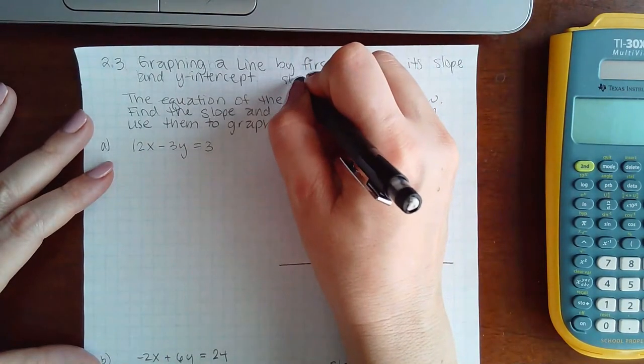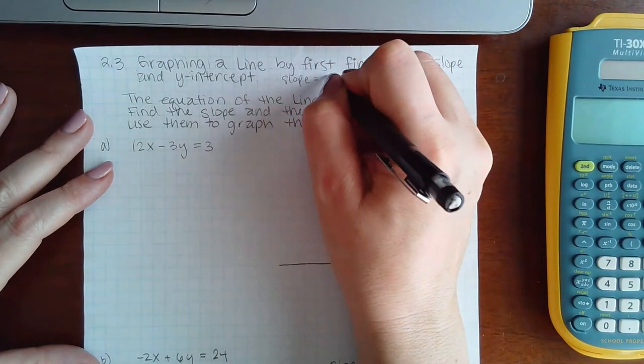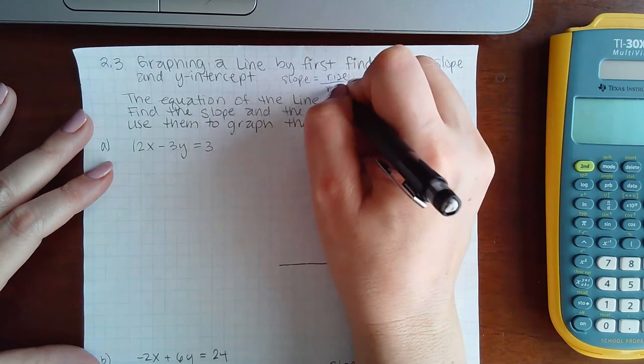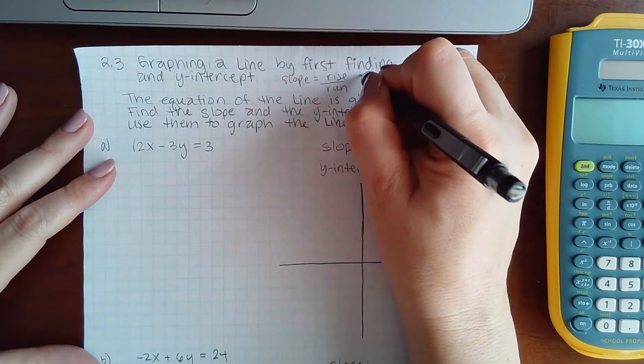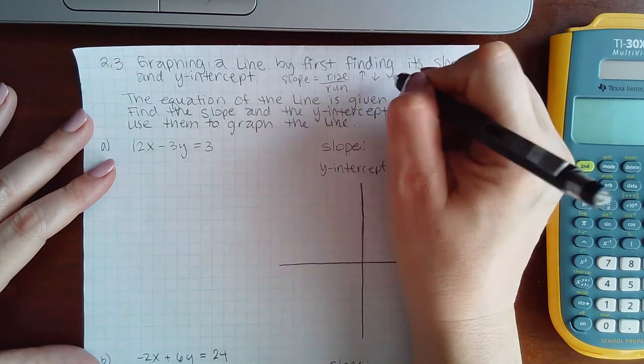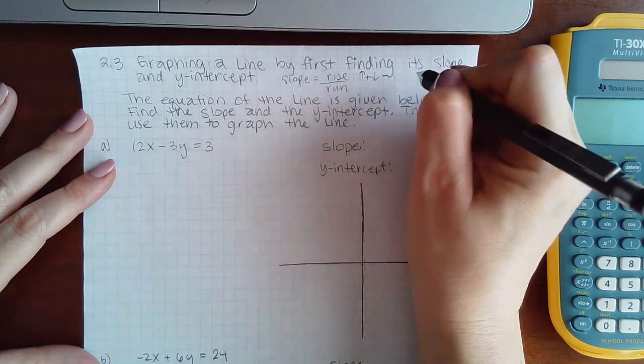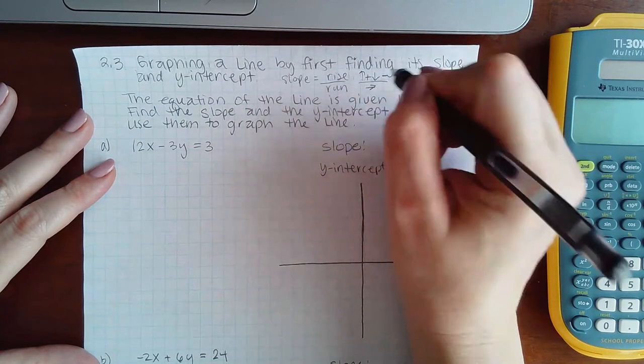Slope is going to be your rise over your run, so it's going to be your movement of going up or down depending on if it's positive or negative, and then always run forward to the right.